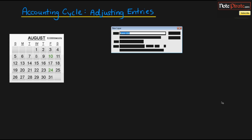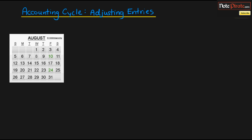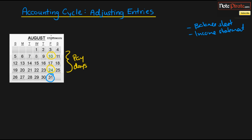This is a payroll schedule for the month of August. We're going to say that it is August 31st — the end of the month — and we're preparing our balance sheet and income statement for internal use, to get an idea of our assets, liabilities, revenues, and expenses. The green highlighted numbers, the 10th and the 24th, are paydays. The workers receive $1,000 bi-weekly, so on the 10th they receive $1,000 and on the 24th they receive $1,000.